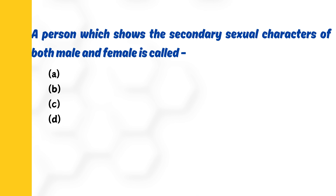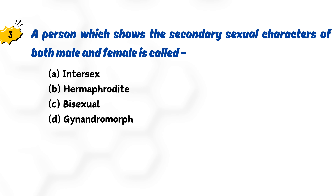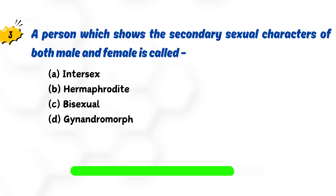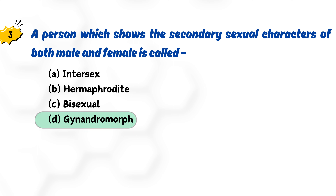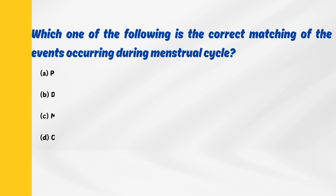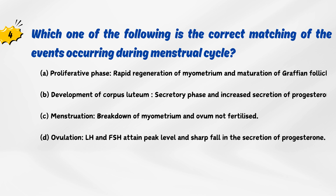A person which shows the secondary sexual characters of both male and female is called? Which one of the following is the correct matching of the events occurring during menstrual cycle?